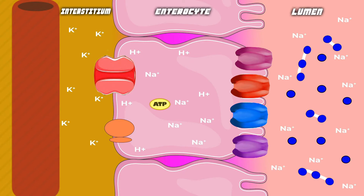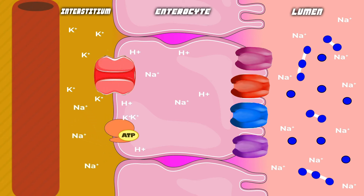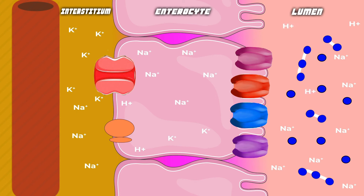For absorption of amino acids, dipeptides, and tripeptides, just like in the case of carbs, we have the sodium-potassium ATPase pump on the basal surface, which pushes out three sodium ions and brings in two potassium ions using the energy of ATP. This creates an electrochemical gradient for sodium to move into the cell. On the apical surface of the enterocytes we have an antiport system which brings in one sodium ion and pushes out one hydrogen ion. This hydrogen ion then tries to come back into the cell, and while doing so it brings along with it a molecule of dipeptide or tripeptide.